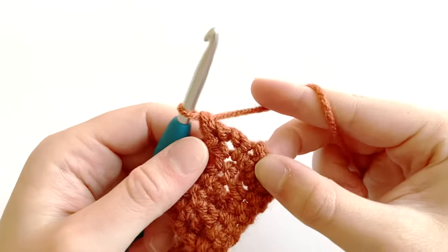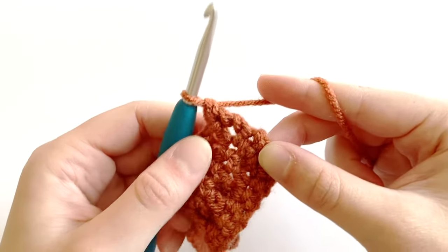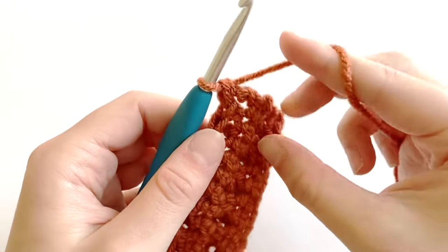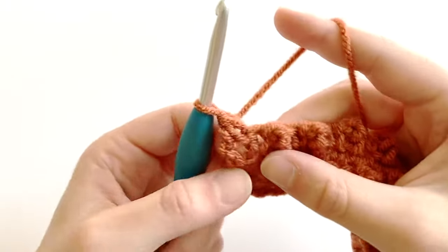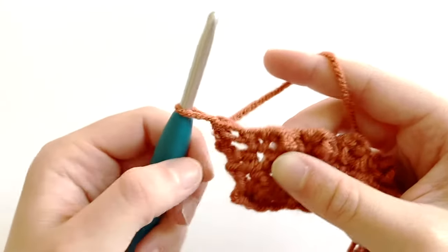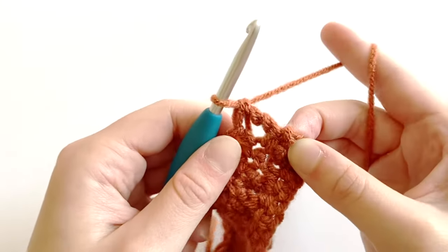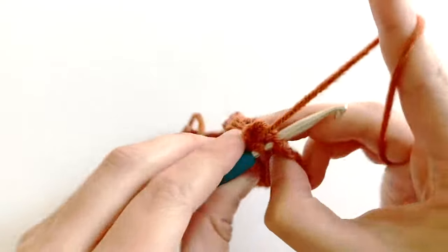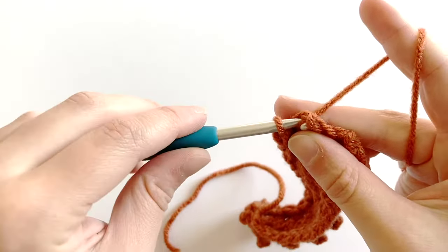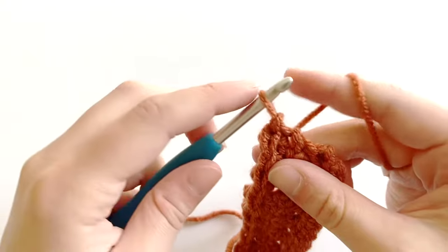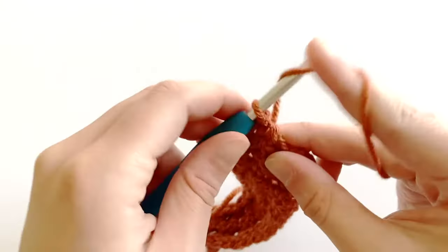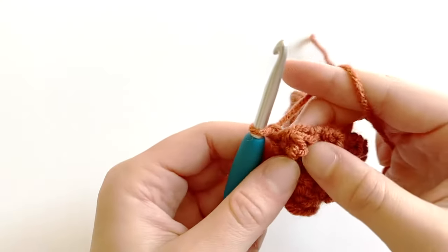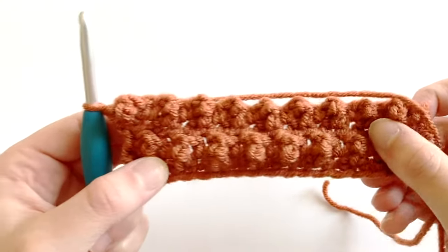So I just worked one triple crochet into the last stitch, and as you can see, because there isn't another stitch to work a single crochet into, it's just sort of there on the end. So what I like to do is then work one slip stitch into that same stitch, and I won't count this slip stitch as a stitch. It's just there to create the bobble at the end.